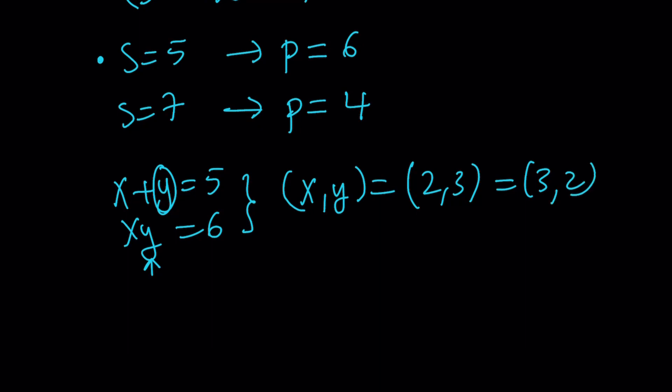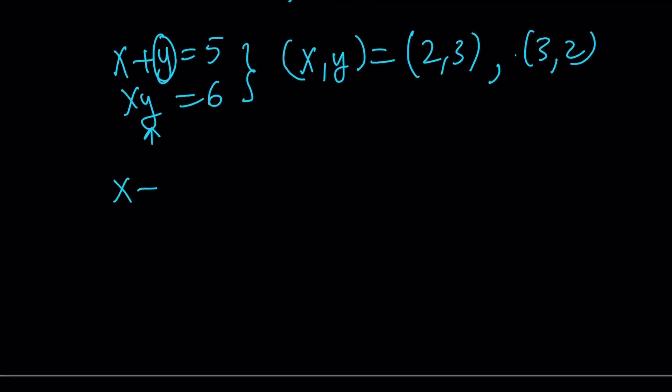Oh, that shouldn't be an equal sign. That should just be a comma. All right. So we got two solutions from here. And if I have the sum of 7 with the product of 4, things aren't that easy here. Let's go ahead and turn this into a quadratic equation. So I can basically replace y with 7-x here.